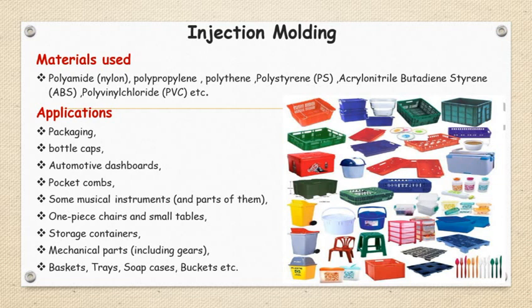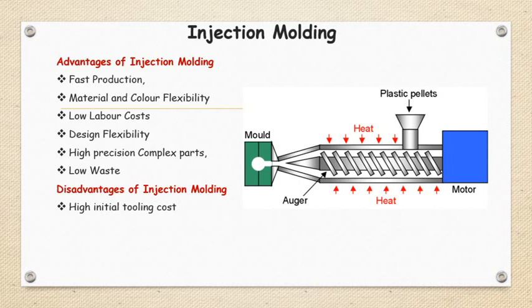The picture shows all the applications of injection molding in day-to-day life. Some listed applications include bottle caps, automotive dashboards, packaging, combs, musical instruments, one-piece chairs and small tables, storage containers, mechanical parts including gears, baskets, trays, soap cases, and buckets. All of these are products made by the injection molding process.